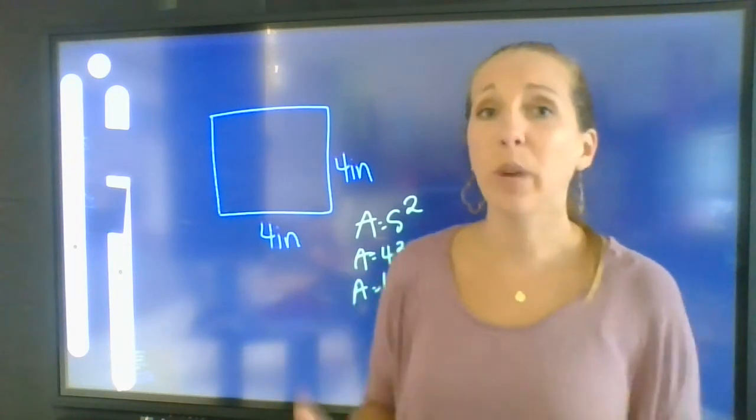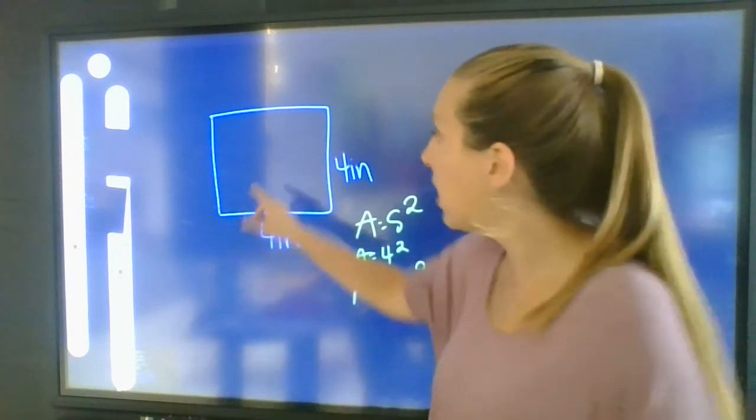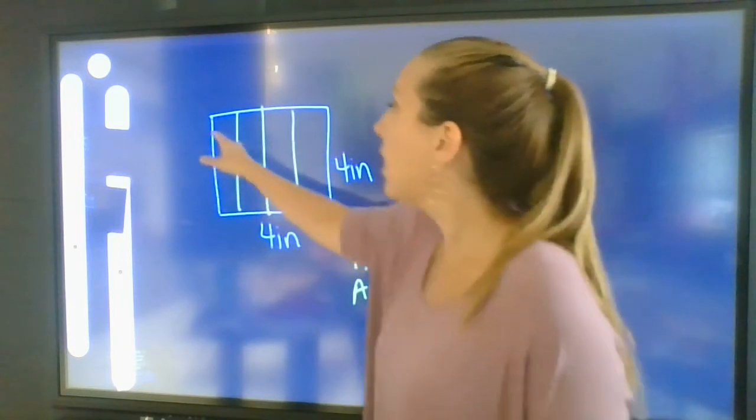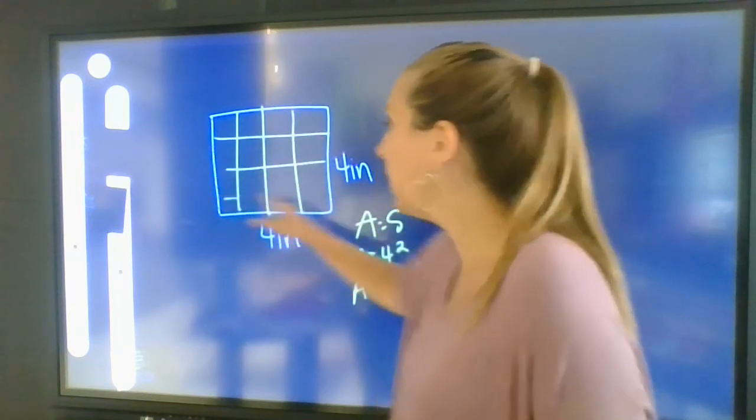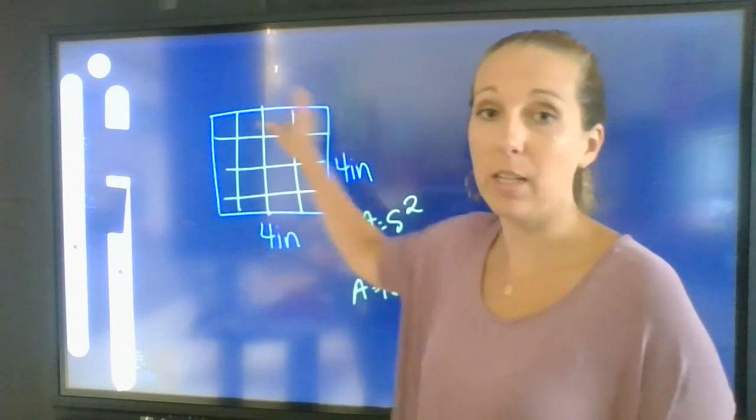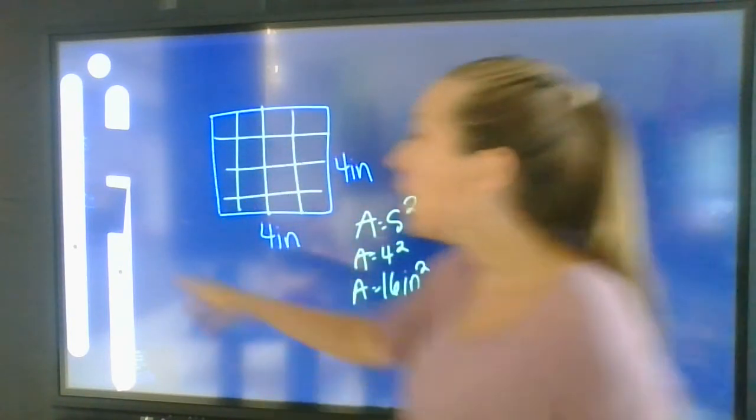The reason that we're talking about inches squared is we have 4 rows of squares here and 4 rows of squares here. So that gives us 16 total squares, so 16 inches squared.